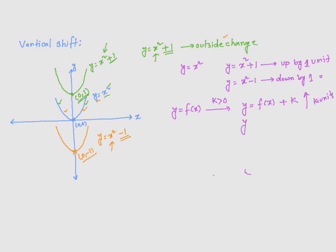Now, y is equal to f of x minus k is going to make it go down or move it down by k units. So, that's the general thing.